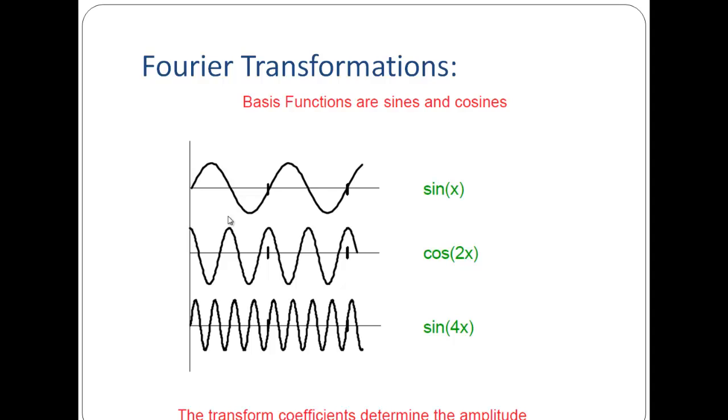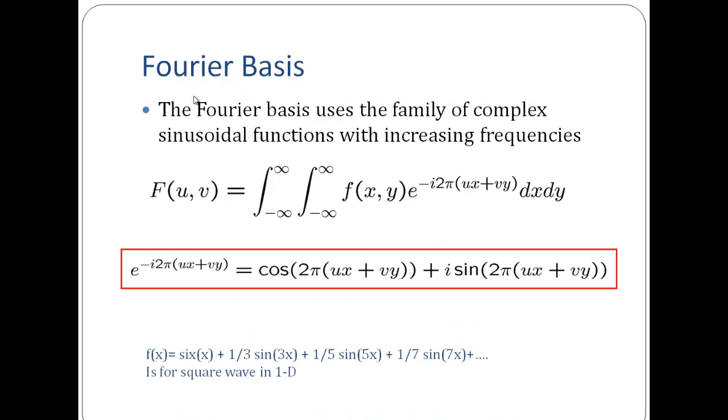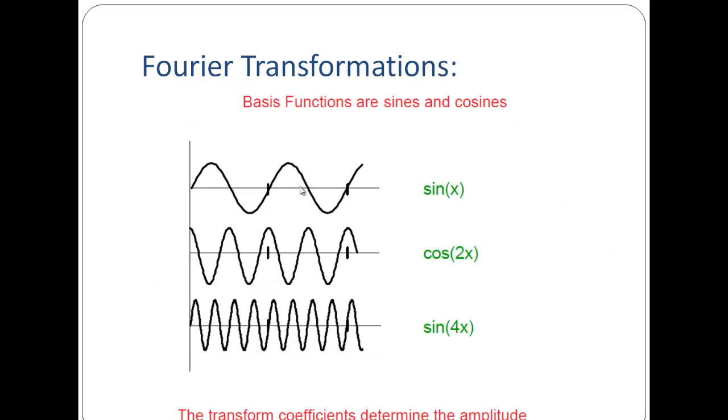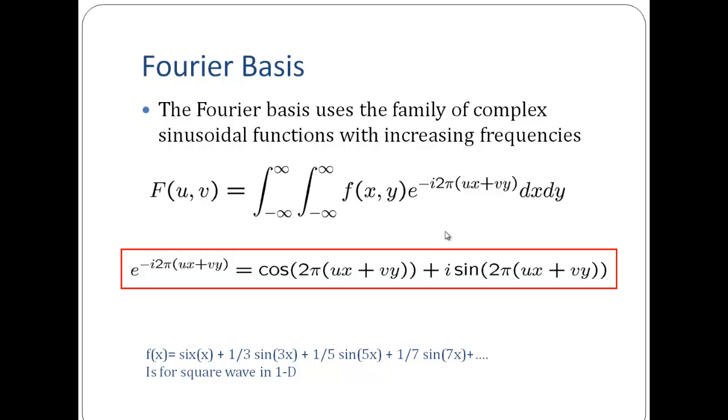So to rewrite any signal by breaking into sines and cosines wave of different frequencies, we represent the images in the frequency domain. So my Fourier basis is the family of complex sinusoidal functions with increasing frequencies. So you can see, this is the typical formula that we have seen always for Fourier transformations, wherein my f is the coordinate system in the real domain, in the spatial domain, where F is the transformed function in the Fourier domain. So essentially what we are trying to do is we are trying to represent any given function as a combination of sines and cosines waves of different frequencies. So the coefficients would tell me the amplitude of the waves involved.